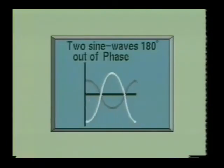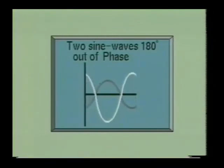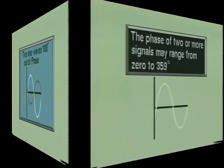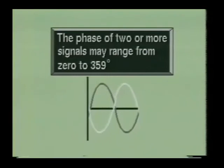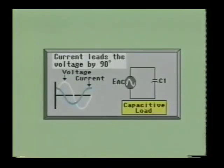Here we see two sine waves which are 180 degrees out of phase. These two waves will go through their zero values at the same instant, but one is increasing in a positive direction while the other is increasing in a negative direction. Phase relationships can range from zero to 359 degrees out of phase. Any time a circuit with an AC voltage applied has capacitance or inductance, or both, in the circuit, there will be an out-of-phase condition which will exist between the voltage and the current.